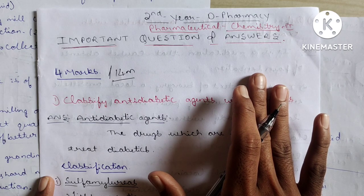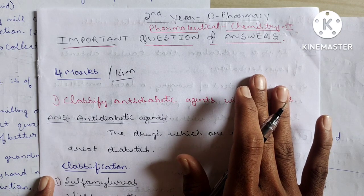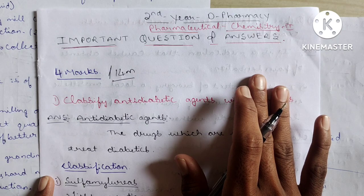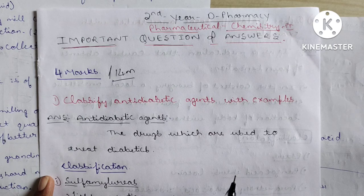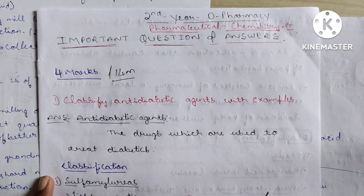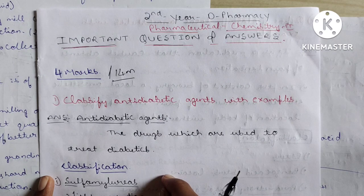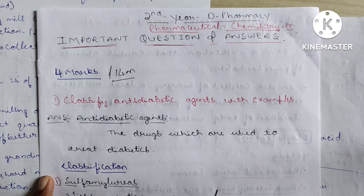My WhatsApp number is 7353649264 — it will be in the description. The notes cost 35 rupees per subject, covering 30 to 35 questions. WhatsApp me first and ask for the subject notes, then pay 35 rupees and I will send you the notes.